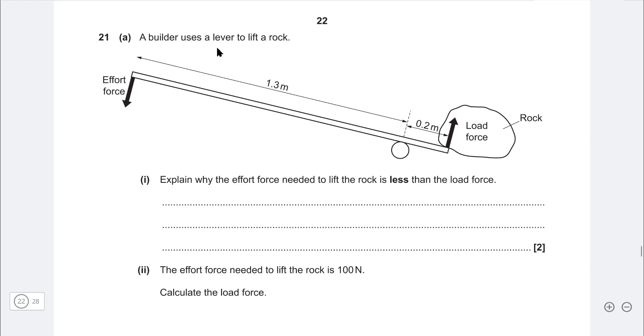Another one. A builder uses a lever to lift a rock. Explain why the effort force needed to lift the rock is less than the load force. The pivot point is right over here and we can see that the effort force has a much larger distance to the pivot. So let's just write this down.